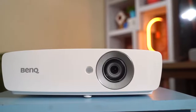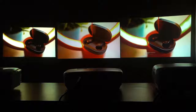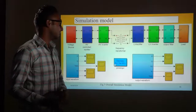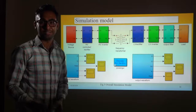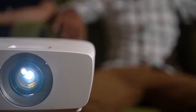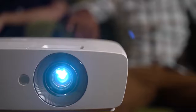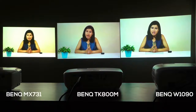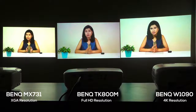Now let's talk about one of the major aspects: resolution. Resolution determines how sharp an image looks when cast on a big screen. For school, college, and office PowerPoint presentations, even low-resolution XGA projectors like the BenQ MX731 can suffice. But for watching high-definition movies or gaming on PlayStation or Xbox, full HD resolution is a must. If you don't want any compromise in sharpness, you can even go up to 4K Ultra HD resolution.